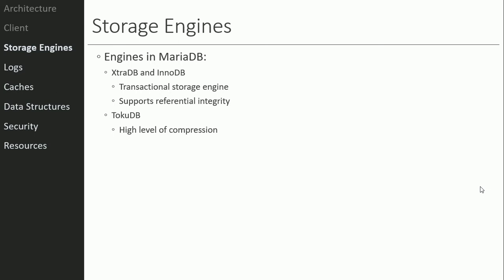TokuDB is like InnoDB but with high compression. It achieves better compression by grouping transactions contiguously — similar to how tar works in Linux — so you can more efficiently use storage space on disk. MyISAM and Aria are very simple storage engines; they don't support foreign keys or transactions. They're generally very good when you have a lot of reads — mostly reading data out of the database with some inserts and updates.